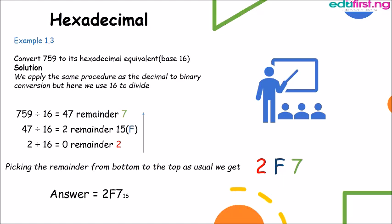2 divided by 16 we get 0. The remainder is 2. Now picking the remainder from bottom to the top as usual, we get 2F7. So the answer is 2F7 in base 16.